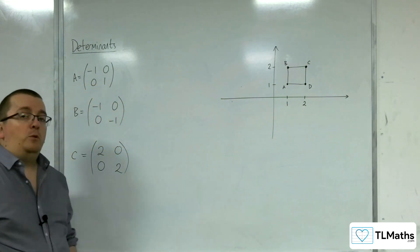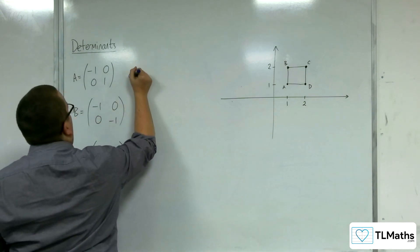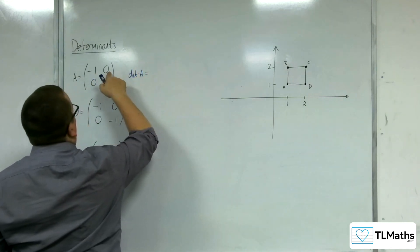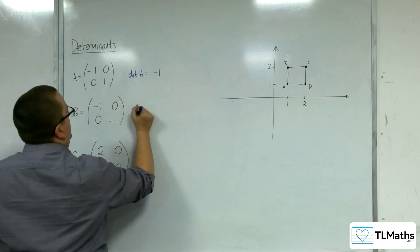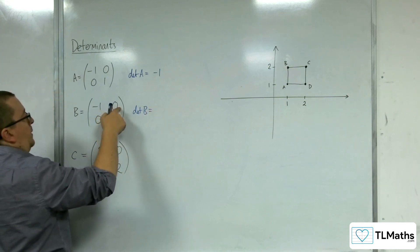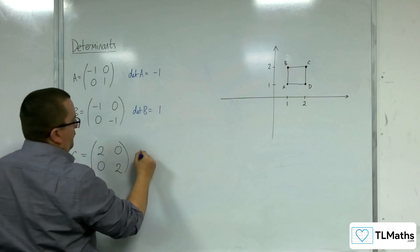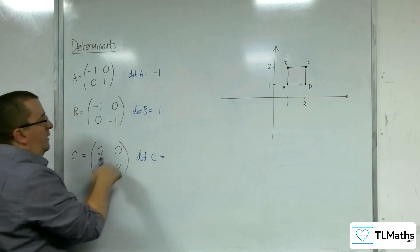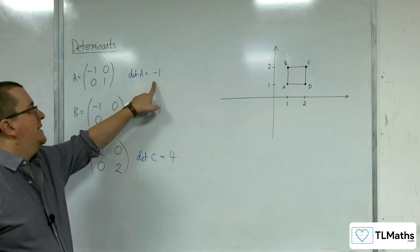So the first thing I'm going to do is work out the determinant of each of these matrices. The determinant of A is -1 times 1 take away 0 times 0, which is -1. The determinant of B is -1 times -1 take away 0 times 0, which is 1. And for matrix C, the determinant is 2 times 2 take away 0 times 0, which is 4. So as you can see, one of these three is negative.